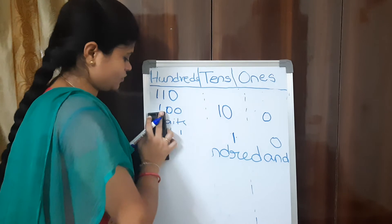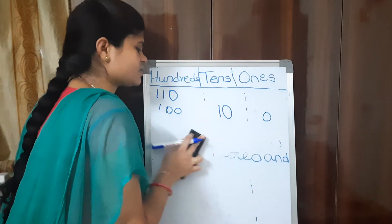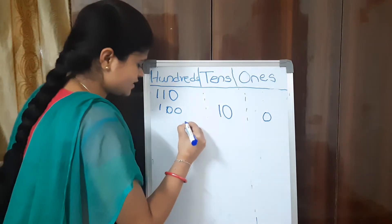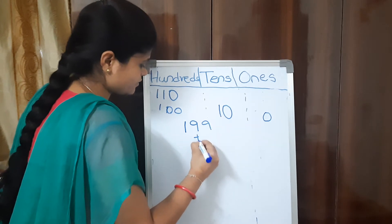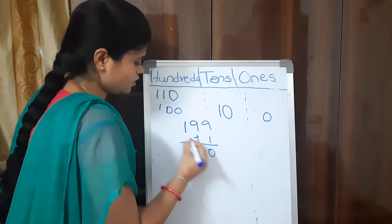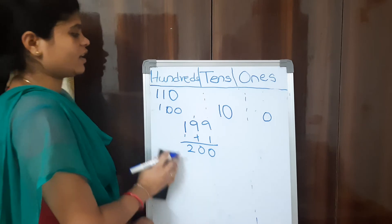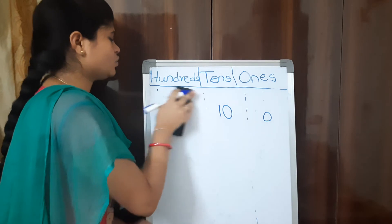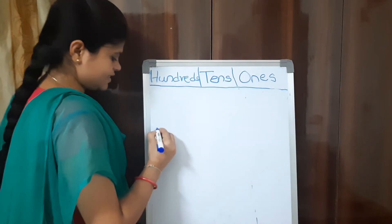After 199, the next number is 200. Adding 1 to 199 gives us 0 in ones, 0 in tens, and 2 in hundreds — so we get 200. How to write 200 in place values? In 200 we have 0 ones, 0 tens, and 2 hundreds.